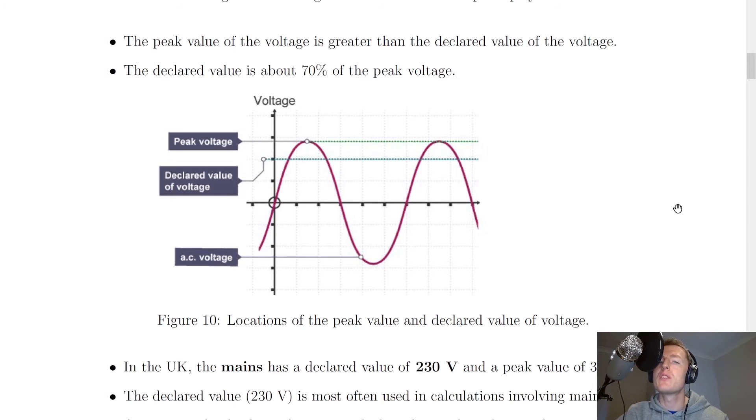Going back to the notes, we're just going to briefly look at some new terminology to do with AC signals. So there's something called the peak value of the voltage and the declared value as well. The peak value of the voltage is greater than the declared value of the voltage. The declared value is about 70% of the peak voltage.